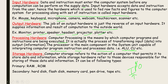Storage hardware refers to the action of a computer that permits it to store data and information. Storage hardware refers to those devices responsible for storing data and information. There are two types: primary storage (such as RAM) and secondary storage.